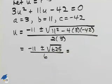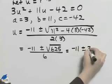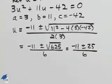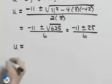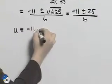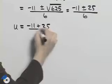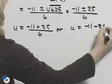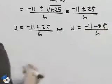Now that simplifies to negative 11 plus or minus 25 over 6. At this point, I can write this as u equal to negative 11 plus 25 over 6, or u equal to negative 11 minus 25 over 6.